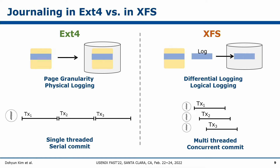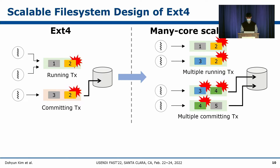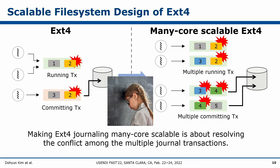These two file systems also differ in on-disk logging. In EXT4, a single thread commits transactions one-by-one sequentially. However, XFS creates a thread for each transaction, and each thread commits its transaction concurrently. Other approaches making EXT4 many-core scalable use multiple running and committing transactions. As the number of ongoing transactions grows, page conflicts become more severe, so studies on scalable EXT4 focus on resolving page conflicts among multiple journal transactions.